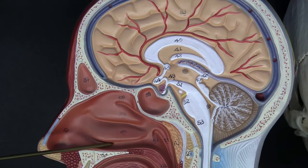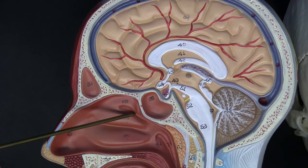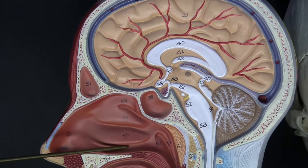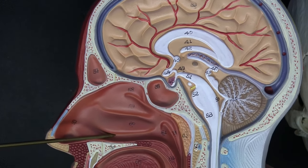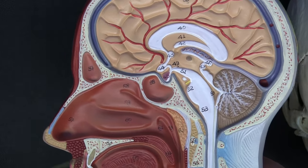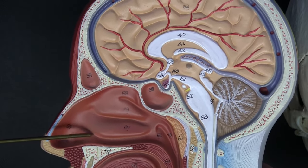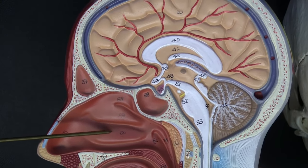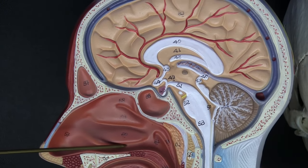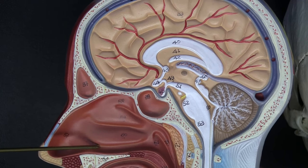There are spaces under and between these conchae, and that is going to be a place where some of the spaces in our head, like our air sinuses, will empty. Here we have our inferior meatus, the space inferior to the inferior concha, that's where our lacrimal apparatus, the tears, are going to drain.